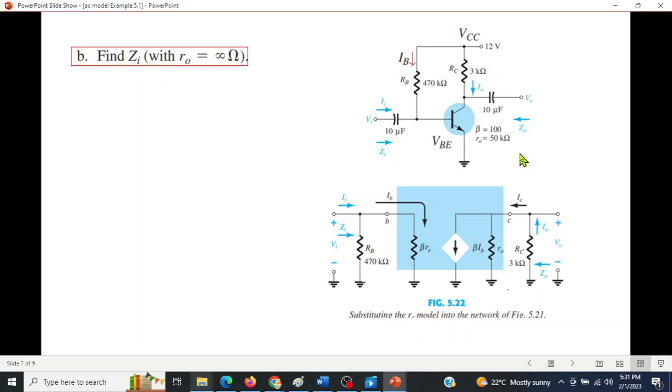Part 2 says find Z_i with r_o = ∞, so we are assuming r_o is infinity. What we have done is in this circuit, in place of this transistor we have put in the equivalent common emitter circuit here. Whenever we do AC analysis we ground all the DC sources or make all DC sources zero. Therefore R_B will be connected to ground as shown here, and similarly R_C will also be connected to ground. This is the equivalent circuit.